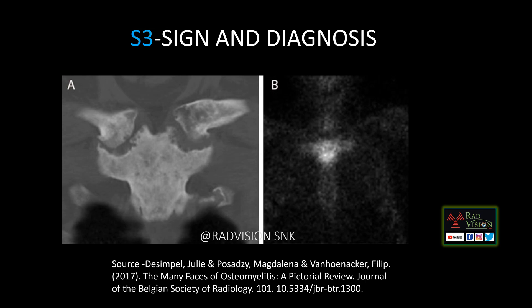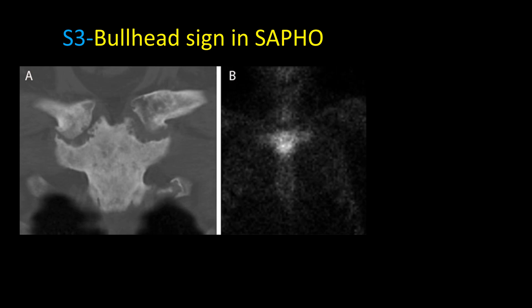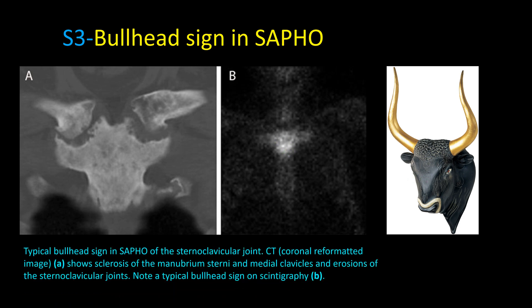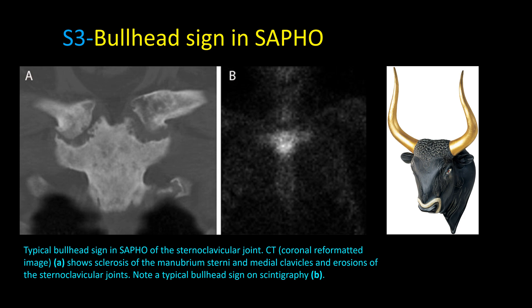Next case — from a journal (source given below). Here you can see the sternum and the sternoclavicular joints; there are erosions noted in the sternum and sternoclavicular joints, and increased uptake on bone scan. This is called the bull head sign in SAPHO syndrome. The sternum resembles the head and the sternoclavicular joints resemble the horns of a bull on nuclear scans. SAPHO stands for Synovitis, Acne, Pustulosis, Hyperostosis, and Osteitis syndrome. Remember: bull head sign in SAPHO.